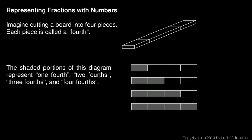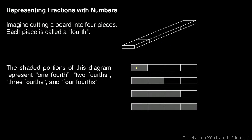Fractions can be represented with numbers, which is what we need to do to deal with them mathematically. Imagine a board cut into four pieces — each piece is called a fourth. Looking at the same board from a different angle, we can see one of the pieces is shaded.